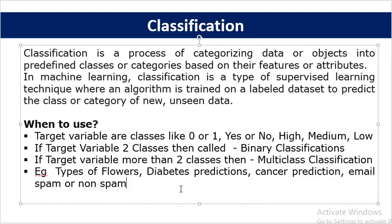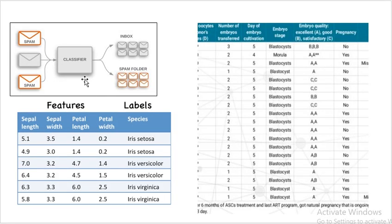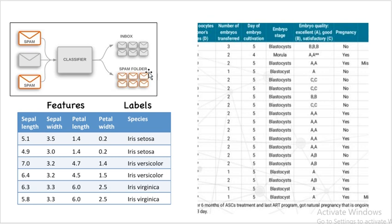Here are some examples of classification. A classic example is determining whether an email is spam or non-spam. Another example is classifying flowers into different categories based on attributes like sepal and petal length and width. Based on different test attributes, you can also classify whether a person is pregnant or not. In all these cases we are classifying data points into different classes, making it a classification use case — which is supervised learning.